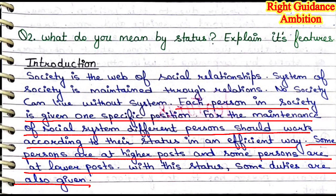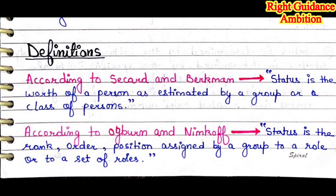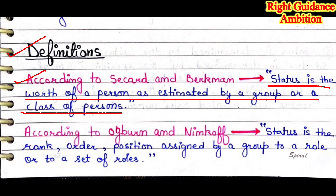With each status, every person has some duties — some duties are made by their own society. So when a person is maintaining their status, they have duties toward their own country, their own society, and their own people. The next heading is definition. According to Skard and Berkman, status is the worth of a person as estimated by a group or a class of persons. You have to write this to the point. In the long question, it is very important that you follow a particular pattern and write your answer. You can't skip the definitions — it is better that you write the definitions in your answer, and if you write it two or three times, you will easily learn it.